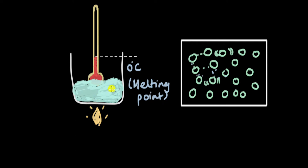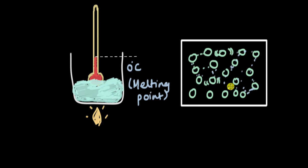When ice starts changing into water, even if you supply heat, the temperature remains at zero degrees Celsius until all the ice has melted. That is because all the extra heat energy being transferred is used up by the particles to overcome and break the forces of attraction between them. Once all those forces are broken and the particles move freely, the temperature starts rising again.